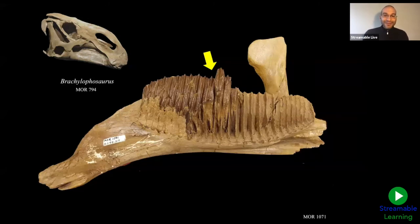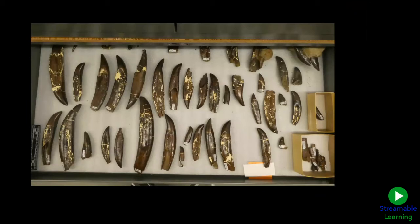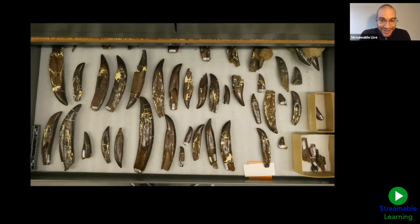Just by looking at parts of the anatomy — the skull, the teeth — we can learn something about what this animal was doing. Opening another drawer in the collections, here are some more teeth of another dinosaur. Can anyone tell me what kind of dinosaur these teeth might belong to? We have lots of guesses coming in — T-Rex, velociraptor, carnivore, mosasaurus, stegosaurus, allosaur, tyrannosaur.